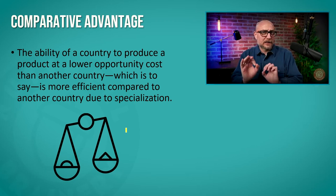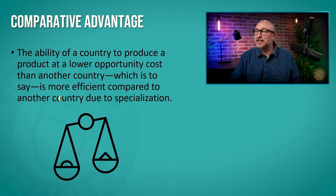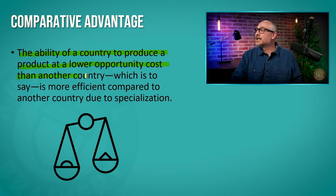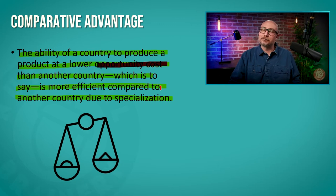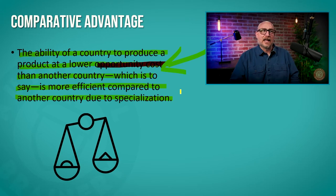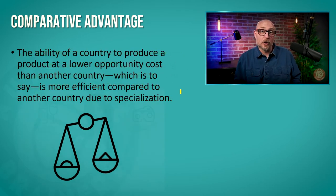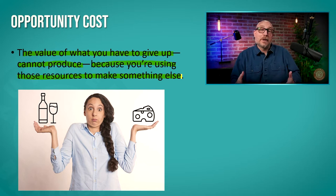Comparative advantage is a little tricky, so we're going to explore it in some depth. The dictionary definition: the ability of a country to produce a product at a lower opportunity cost than another country — which is to say it is more efficient compared to another country due to specialization. The grand phrase here is opportunity cost. Opportunity cost is the value of what you have to give up — in other words, what you can't produce because you're using those resources to make something else.